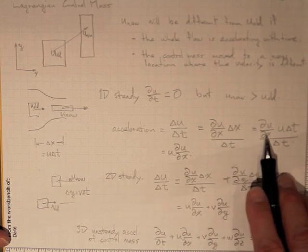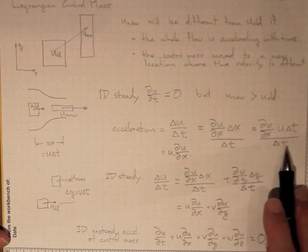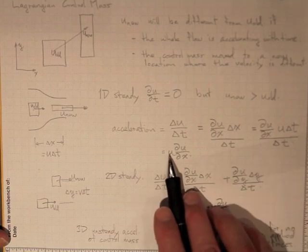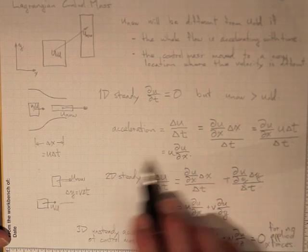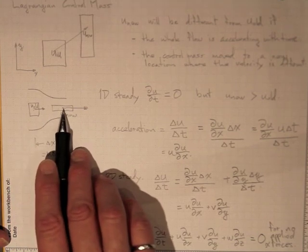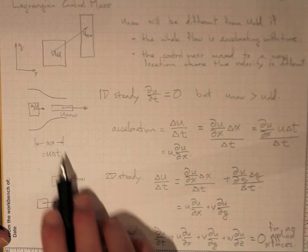So ∂u/∂x Δx becomes u Δt and we've got Δt on the bottom. Cancel out the Δt's and we've just got u ∂u/∂x. That's the acceleration of this little chunk of mass because it's moving from this low velocity region to this high velocity region.